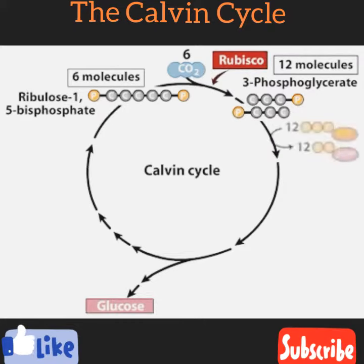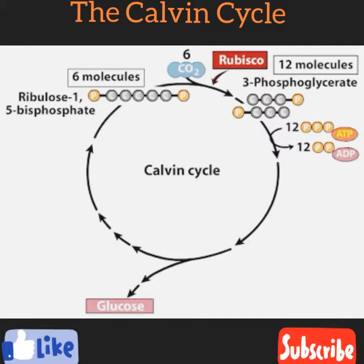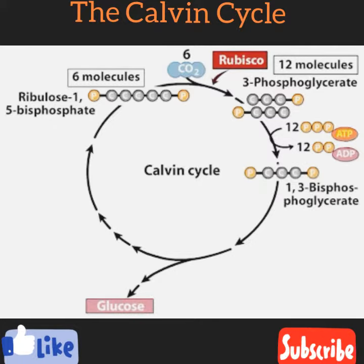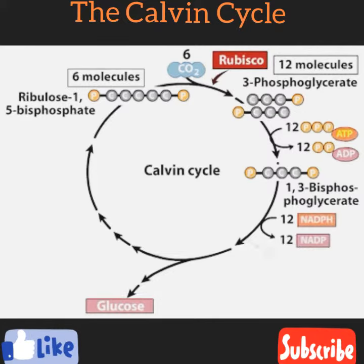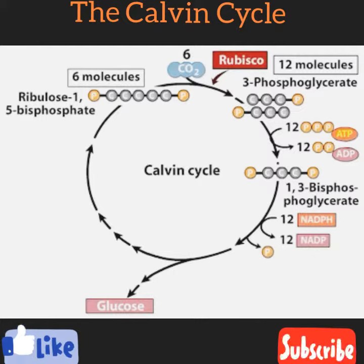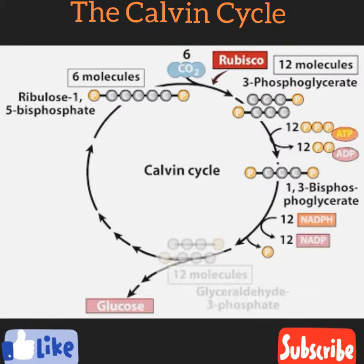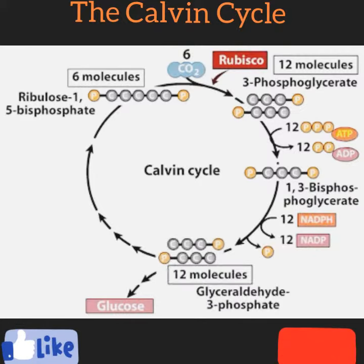ATP, which is produced during the light reactions, donates phosphate groups to these molecules, resulting in 1,3-bisphosphoglycerate. NADPH, which is also produced during the light reactions, donates electrons to these three-carbon molecules, resulting in glyceraldehyde-3-phosphate.